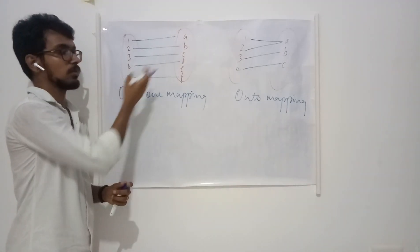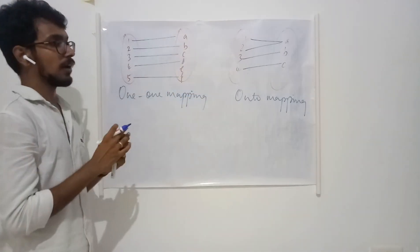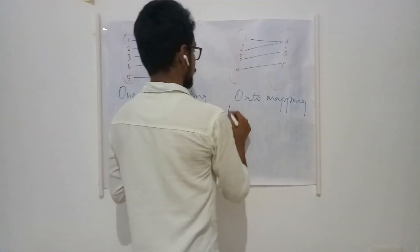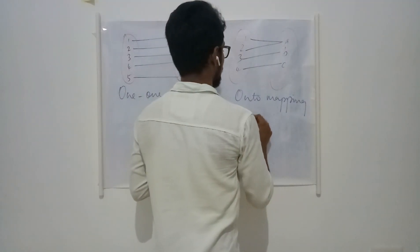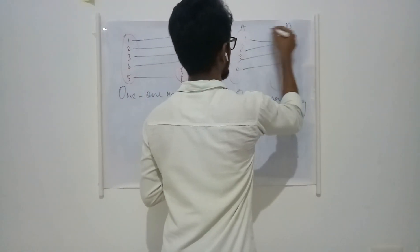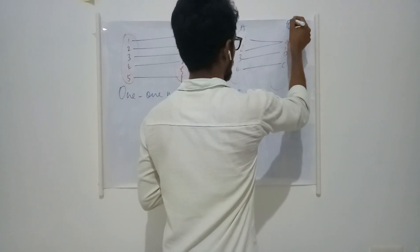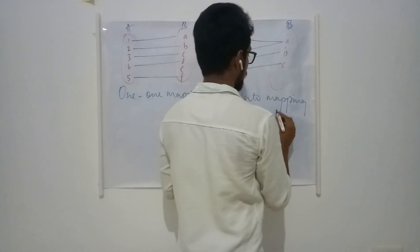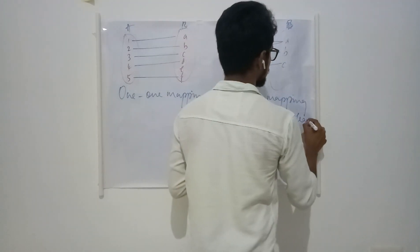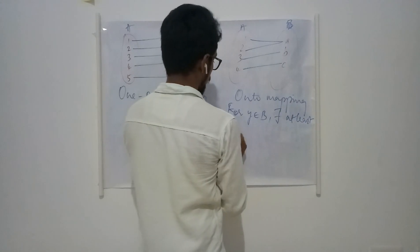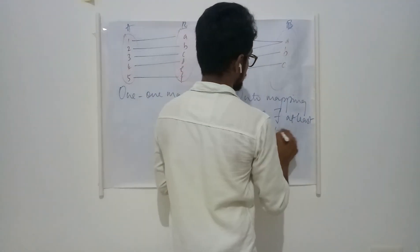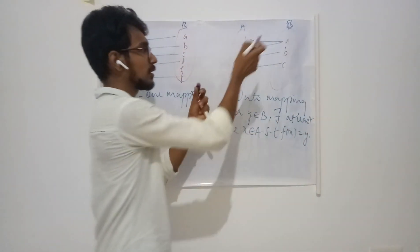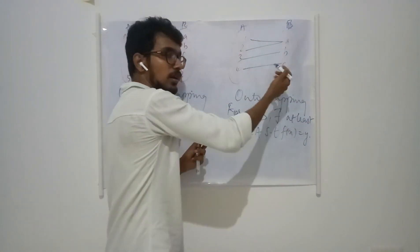By seeing the diagram, we can see that this is one-to-one and that is onto mapping. If we have to give the proper mathematical definition: for all the elements of the codomain, there exists at least one x in A such that f(x) = y. We are saying at least one x, which means that no element is left around here.